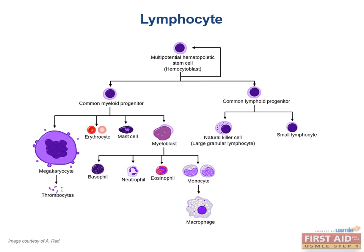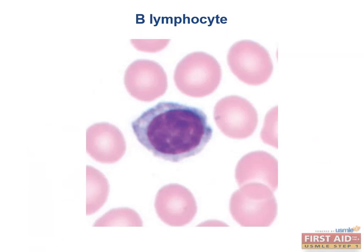The next two lymphocytes — B and T cells — are impossible to differentiate by light microscopy. Both are round cells with densely staining dark purple nuclei and very little pale cytoplasm, which is dramatically different from all the cells of the myeloid lineage. Of the two main types, we will start with the B cells. The B lymphocytes go through both differentiation and maturation in the bone marrow — you can think of the B in B lymphocyte as standing for bone marrow. Their main function in life is to produce antibodies.